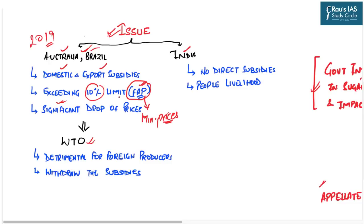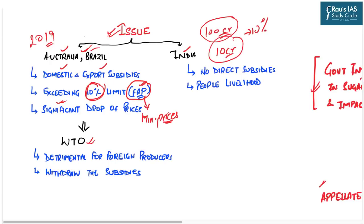These countries claim that the amount of such subsidies breaches the 10% limit provided by GATT. According to WTO principles, a country cannot provide subsidies crossing the 10% limit on the basis of total value of production. For example, if the total value of sugarcane produced in India is 100 crores, the subsidies cannot exceed 10 crores — this is known as the 10% rule.